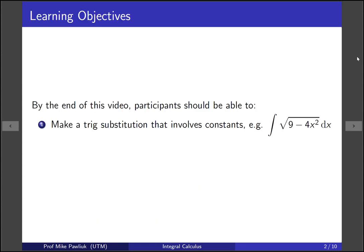The learning objectives for this video are, by the end of this video you should be able to make a trig substitution that involves constants, for example the integral of square root of 9 minus 4x squared.